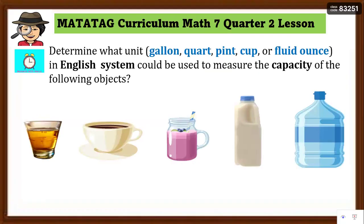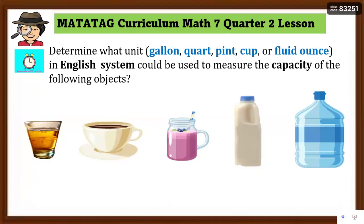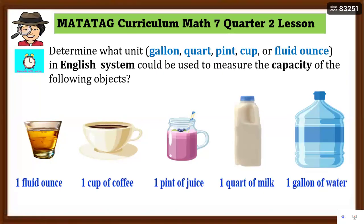Let's determine your prior knowledge. What unit will be used — gallon, quart, pint, cup, or fluid ounces — in the English system to measure the capacity of the following objects? For the first picture, the correct answer is fluid ounces, abbreviated fl oz. Next is cup, symbol C. The third picture is pint, symbol pt. The fourth is quart, symbol qt. And the last is gallon, symbol gal.